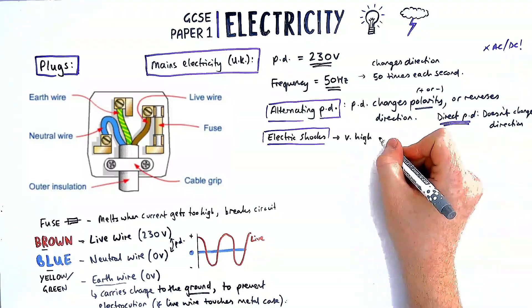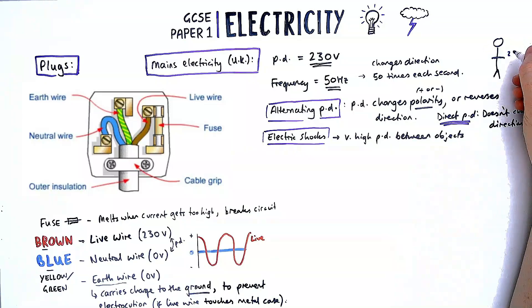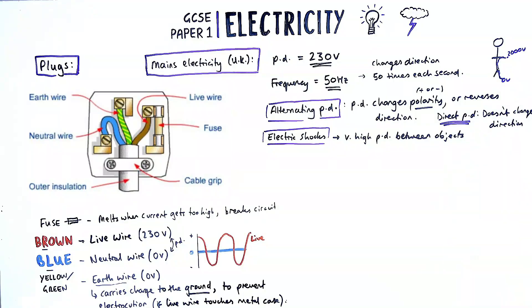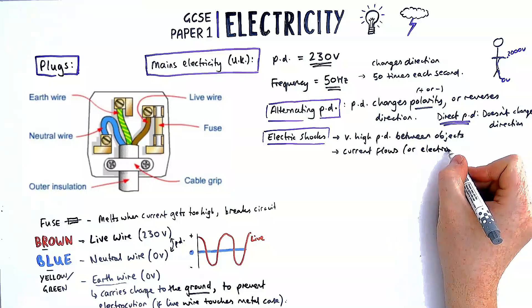To get an electric shock, if one of these things doesn't work inside the plug, there has to be a very high potential difference between two objects. That means current or charged electrons can move between the two objects, causing the electric shock.